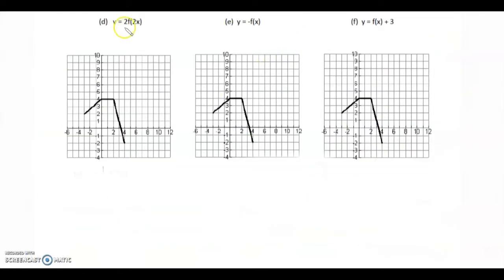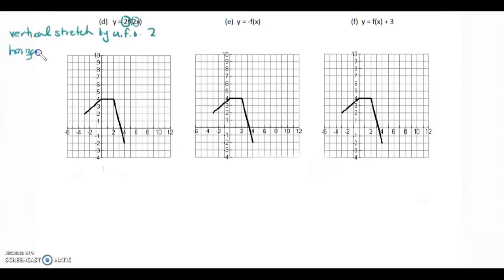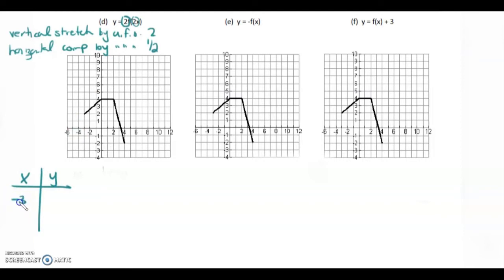Now for D, we have two transformations. The first 2 here is going to be a vertical stretch by a factor of 2. And this second 2 here is going to be a horizontal compression by a factor of one half. So let's start with the actual x and y that we have: negative 3, 2; 0, 4; 2, 4; and 4, negative 2.